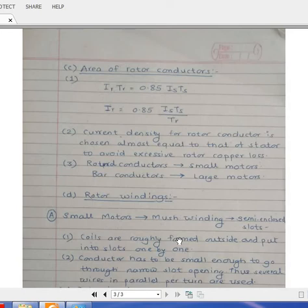How you can write down MMF? Stator rotor MMF is ampere turn. So it is IR into TR which is 0.85 times IS into TS. So your IR is going to be 0.85 IS TS divided by TR. Why we have calculated this IR? Because always while deciding area, we have to consider current density. Current density for rotor conductor is chosen almost equal to the stator to avoid excessive rotor copper loss.